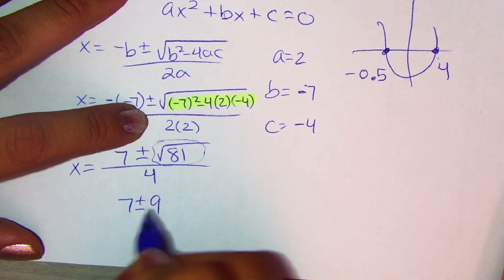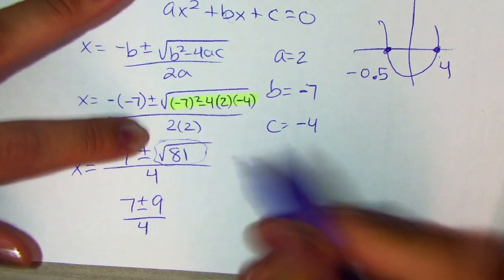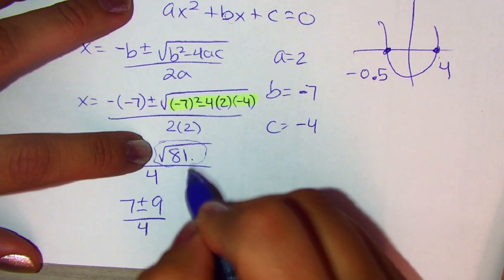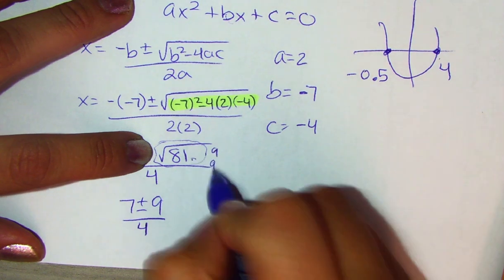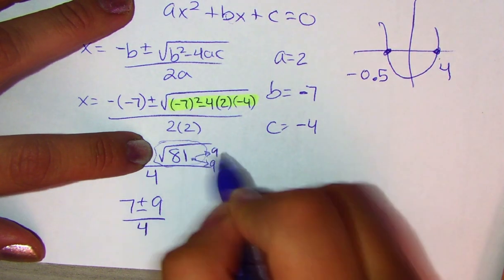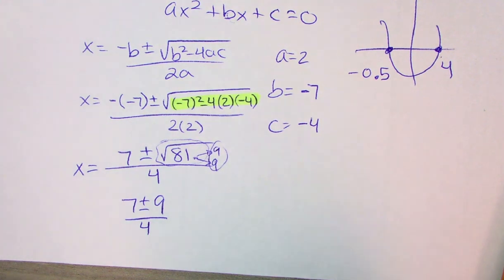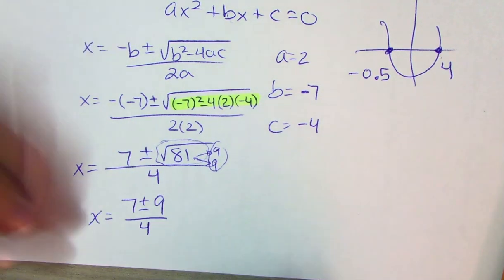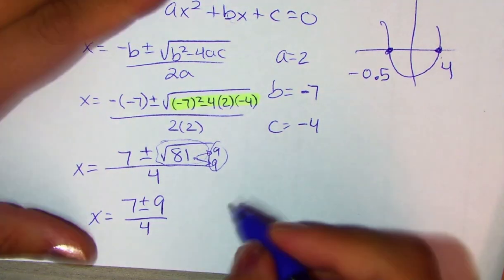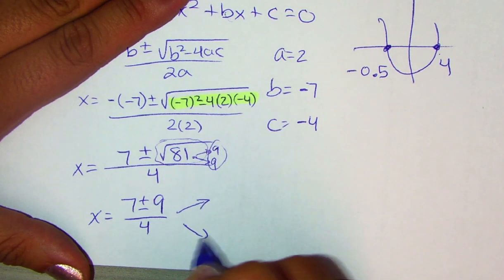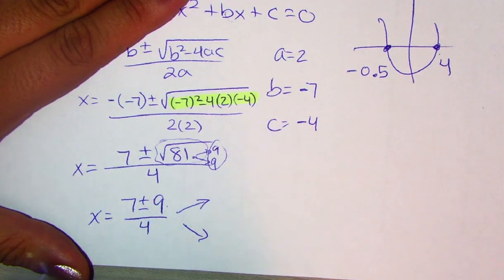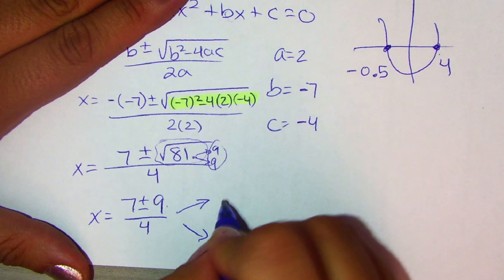So that means we can replace all of this square root of 81 with just a 9. So we're going to have 7 plus or minus 9 over 4. And the reason we get 9 as an answer for this is because 9 times 9 is 81. So because there's two 9s, it comes out of the square root. So your answers are found here when you separate them. 7, 9, and 4 cannot be simplified by a number. So we're going to just go ahead and separate them.